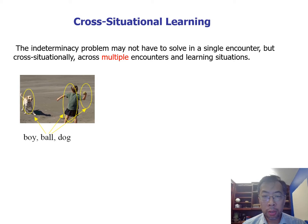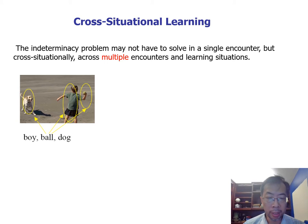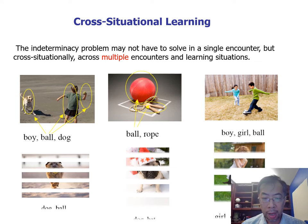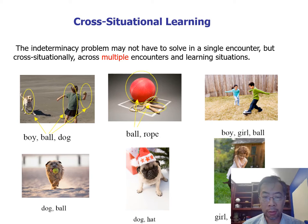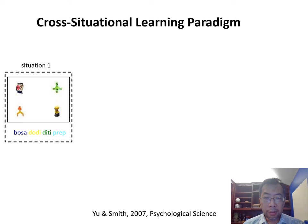One solution proposed to solve the referential uncertainty problem is termed cross-situational learning. The idea is that this indeterminacy problem may not need to be solved in a single ambiguous encounter, but cross-situationally across multiple encounters and learning situations. Even if a learner cannot figure out ball, boy, and dog in one learning situation, after being exposed to multiple situations and aggregating statistical evidence across them, the learner can figure out correct word-referent mappings.